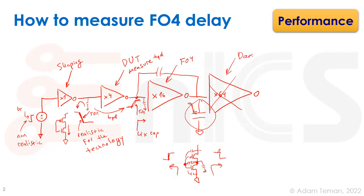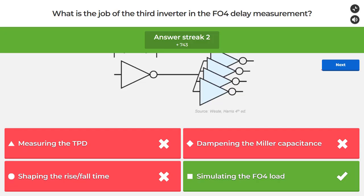To summarize the four inverters: the first shapes the rise/fall time, the second measures the TPD, the third simulates the fan-out-4 load, and the fourth dampens the Miller capacitance.